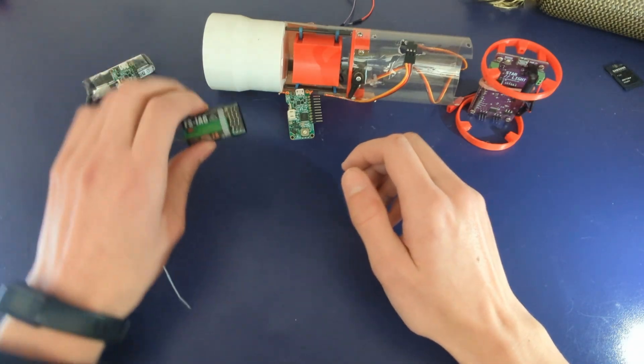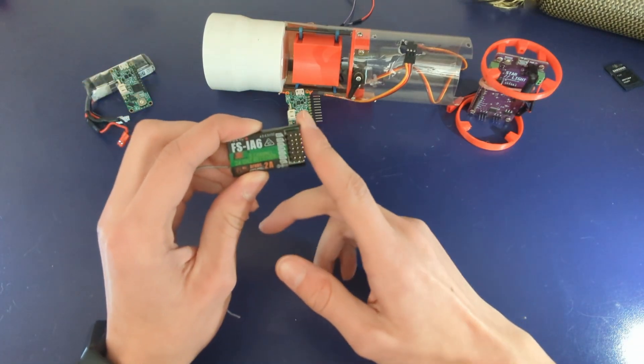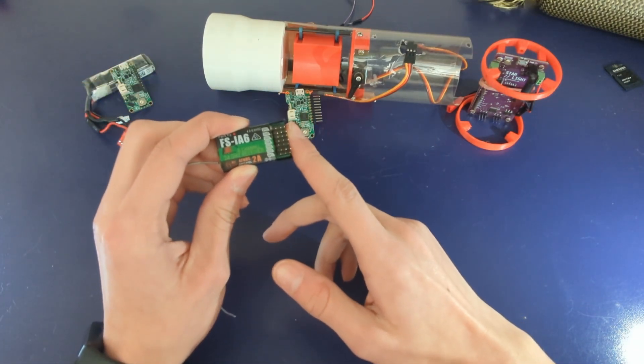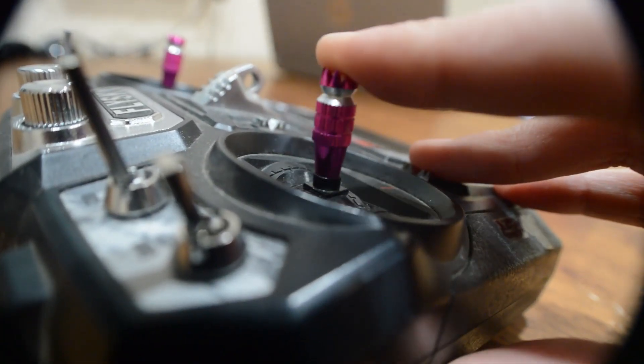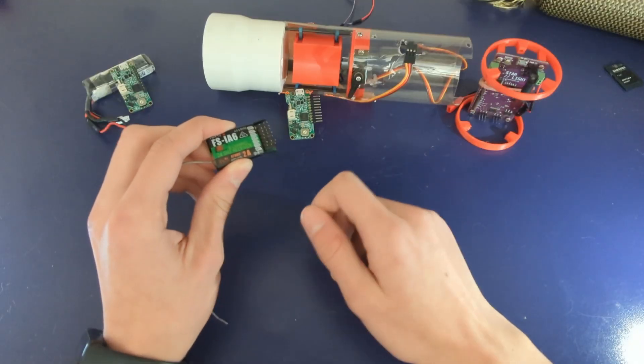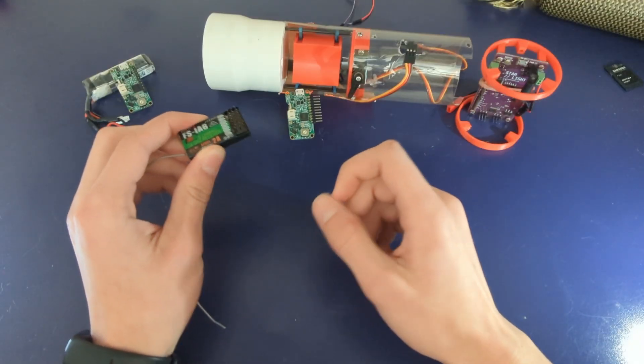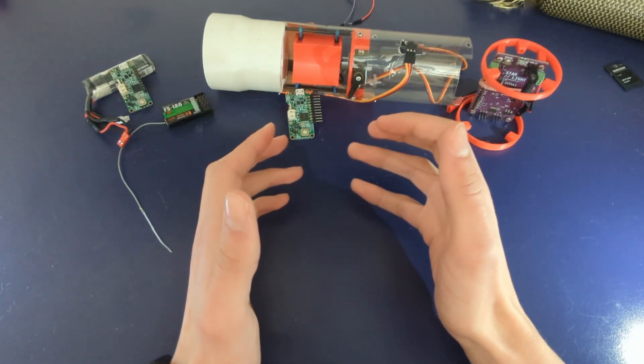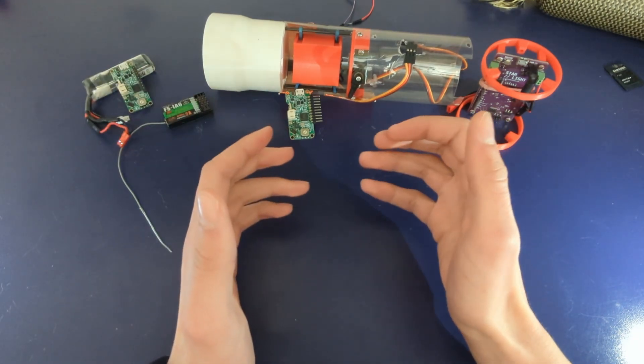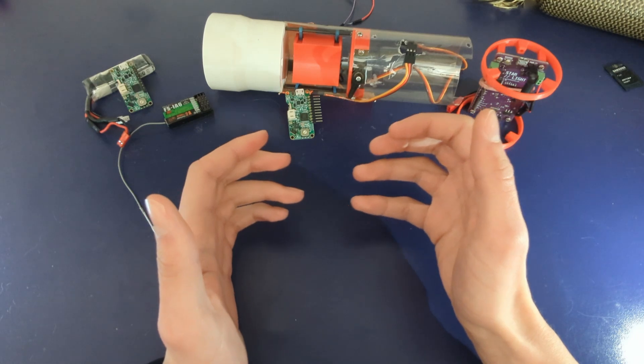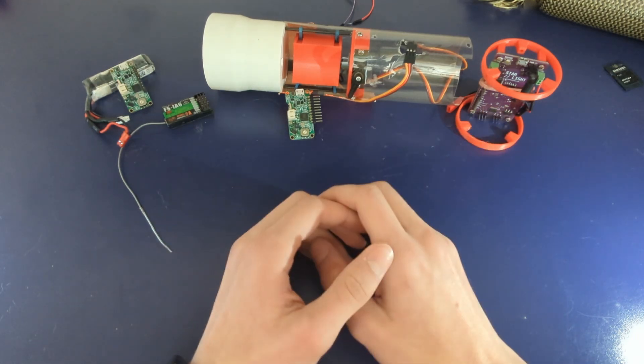For starters, I used an RC receiver like this one. These are controlled by remote on the ground which lets somebody on the ground just decide when to open the parachute bay. This worked pretty good but had issues. Human reaction time is pretty bad and you can't really see super well, plus it's just annoying to have to control a remote and bring a remote to the launch site.